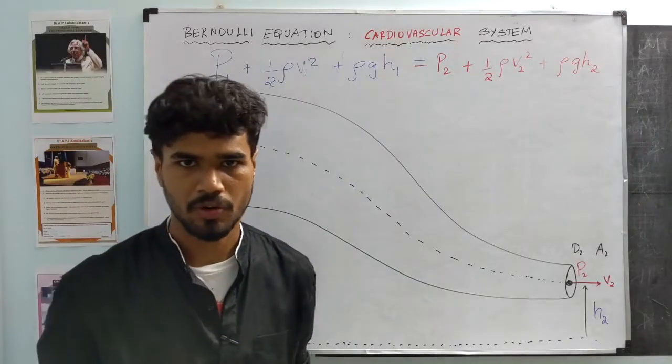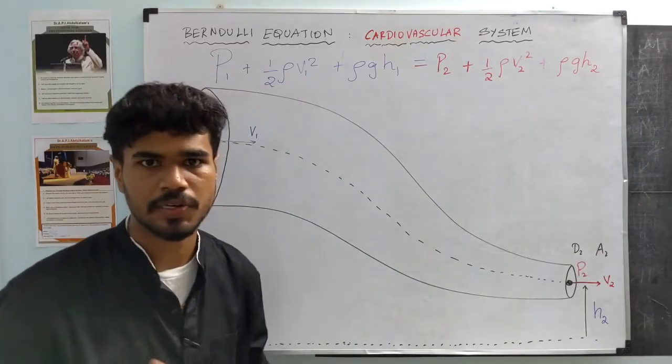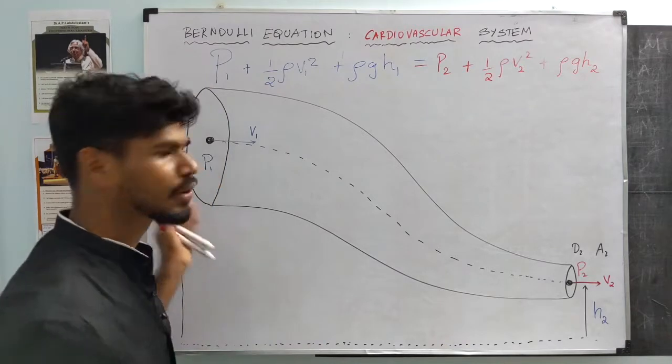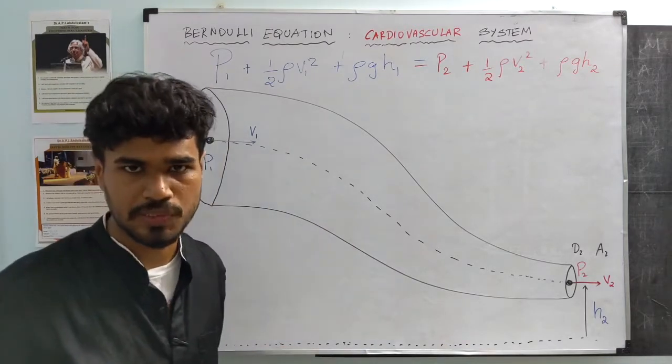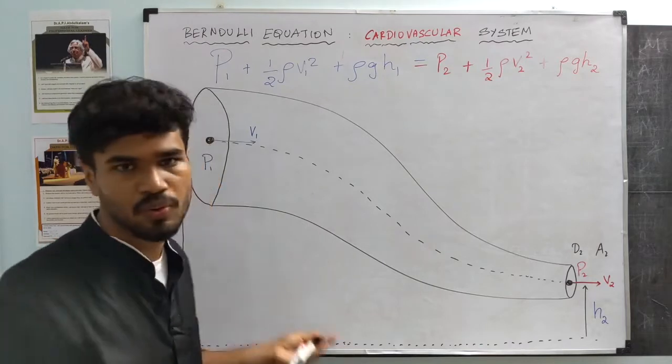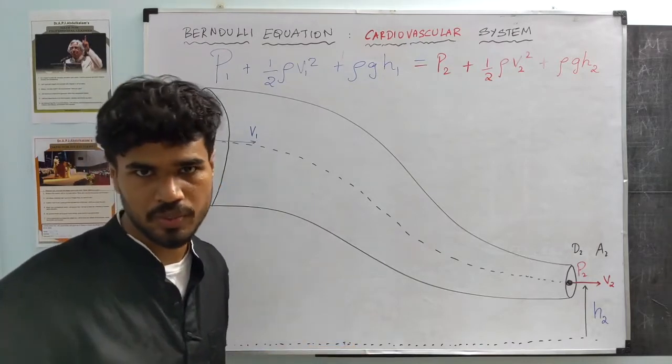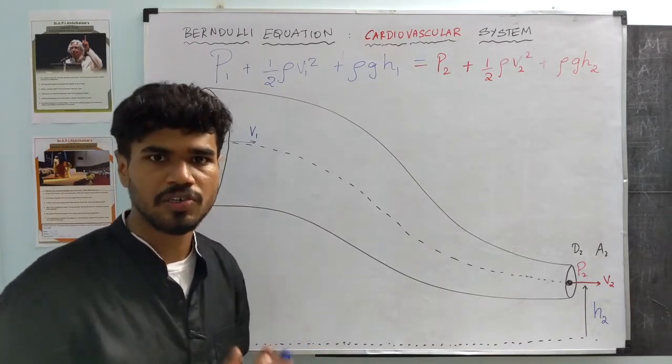Bernoulli equation is a statement of conservation of energy. It works under certain conditions, like the flow is nice, it's laminar, there is no energy loss due to viscous forces. Similarly, the flowing fluid is also incompressible, cannot change its volume.